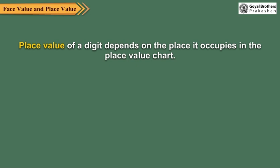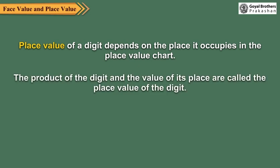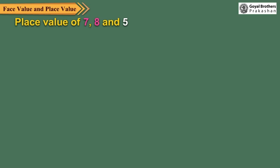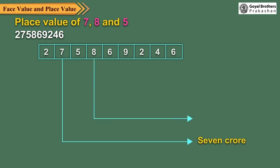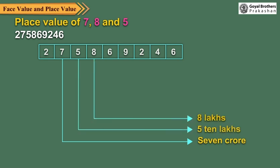The place value of a digit depends on the place it occupies in the place value chart. The product of the digit and the value of its place is called the place value of the digit. For example, the place value of 7, 8, and 5 in 27,58,69,246 are 7 crores, 8 lakhs, and 5 ten-lakhs.